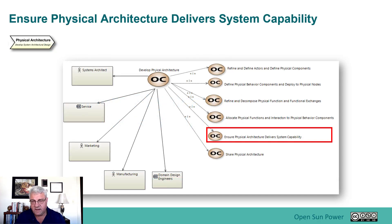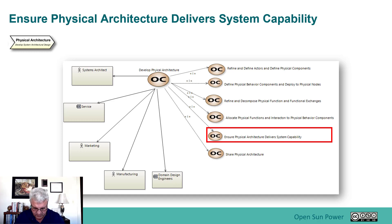In this phase, we're going to look at this capability. You can see that this capability is a sub-capability of developing the physical architecture, and it is primarily done by the system architect, but with the involvement of domain engineers and manufacturing, marketing engineers, and service people — all are involved when we get down to this level of detail.